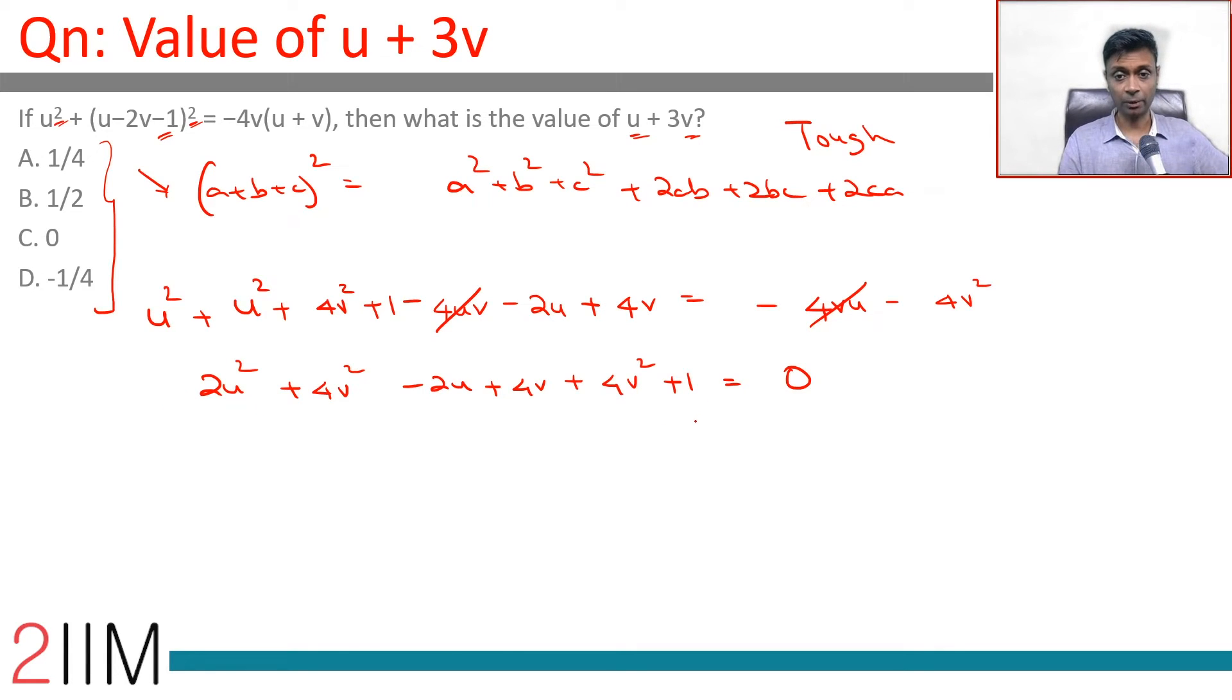Now the interesting part here, the moment you see this and this and see the choices you have got to have a sense of the method. The method here is completion of squares. Straight away I have got to say I am going to deal with a u plus v whole square or a u minus 2 plus v plus 2 the whole square, something like that.